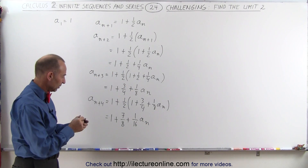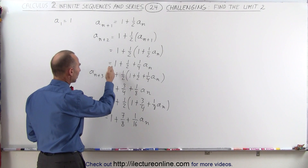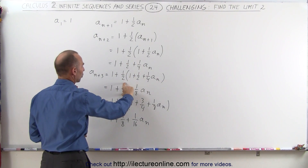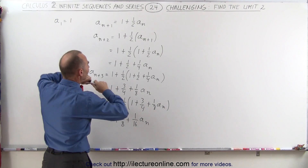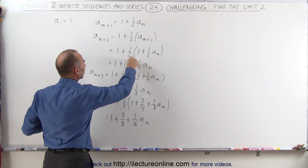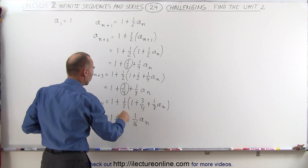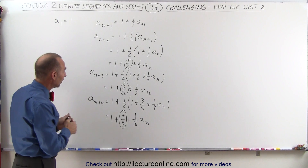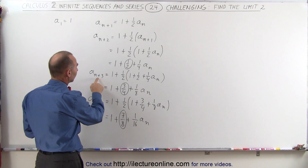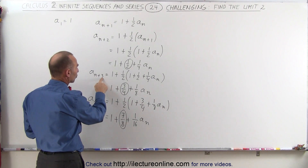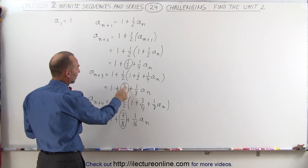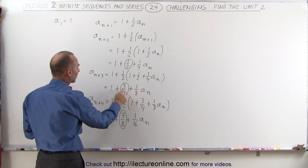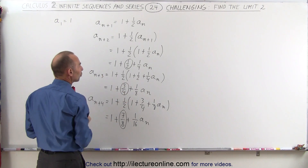Now we begin to see a pattern. Notice we always have a 1 plus. Here we have 1 plus one-half, 1 plus three-quarters, 1 plus seven-eighths. So it looks like the second term in each case is a fraction where the numerator is 1 less than the denominator. The numerator is 2^(k−1) minus 1, and the denominator is 2^(k−1).